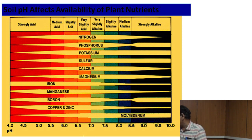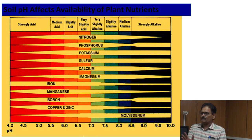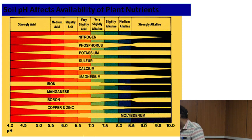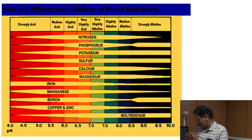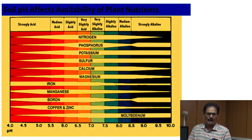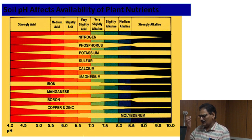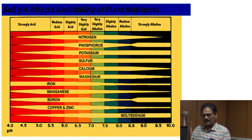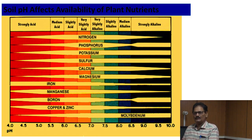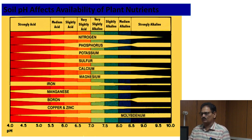In the second scenario, iron availability is good and manganese availability is good, but boron availability again reduces in the acidic soil condition. Copper and zinc availability is good in the acidic soil condition. So overall, in acidic soil condition, our nitrogen, phosphorus, potassium, sulfur, calcium, and magnesium are problematic. In micronutrients, boron and molybdenum are problematic and less available to the plant system.